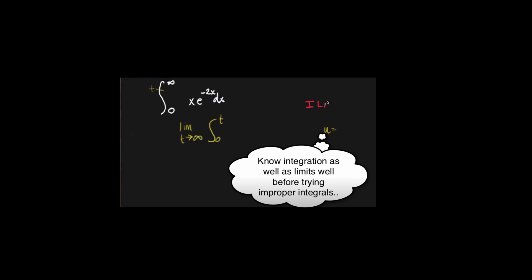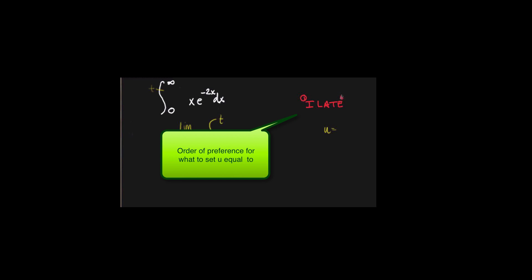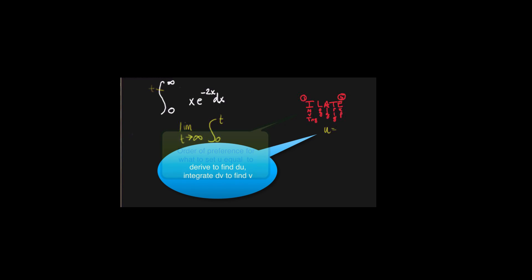I'm going to write for a second. This acronym tells you who is the favorite for u. This is the favorite, this is the least favorite for u. L stands for log, A for algebra, T for trig, E for exponential. So since exponential is the least favorite, that'll be your dv.